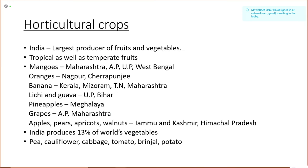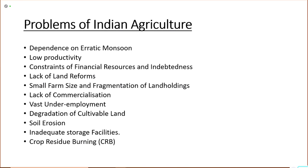Horticultural crops include fruits and vegetables, and India is the largest producer of fruits and vegetables in the world. Both tropical and temperate fruits are produced in India. Mangoes are grown in Maharashtra, Andhra Pradesh, UP and West Bengal; oranges are famous in Nagpur and Cherrapunji; bananas in Kerala, Mizoram, Tamil Nadu and Maharashtra; lychee and guava in UP and Bihar; grapes in Andhra Pradesh and Maharashtra. India produces 13% of the world's vegetables, including cauliflower, cabbage, tomatoes, potatoes and brinjal.